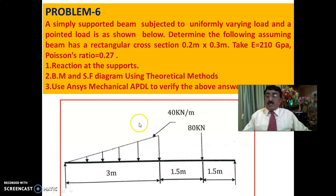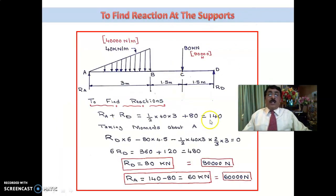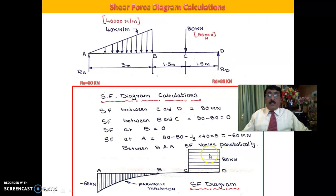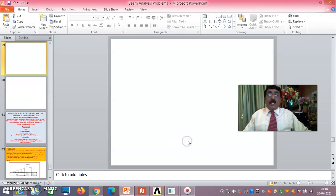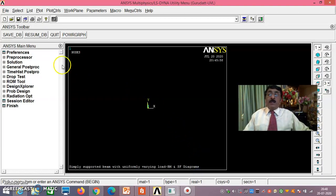This is the problem discussed in session 1: a 3-meter span with 40 kN/m uniformly varying load and a point load. The reaction solution gives 60,000 N and 80,000 N. The shear force diagram shows 80 kN here, zero at B and C with parabolic variation, and minus 60 kN here. The bending moment diagram shows 120 kN·m, with linear variation, horizontal, and cubical variation, becoming zero at both ends.